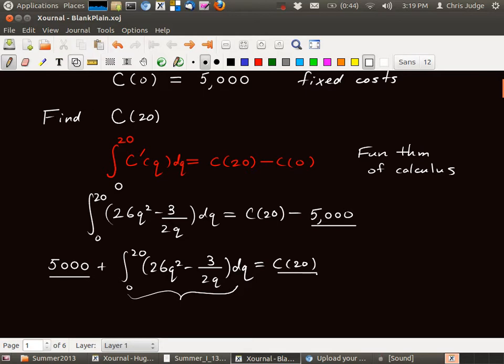If you want to find a different value, maybe C of 10, you just replace everywhere you see a 20 with 10. And in your calculator, instead of using 20, you'd use 10, and that would give you C of 10. The 5,000 is fixed. It never changes.